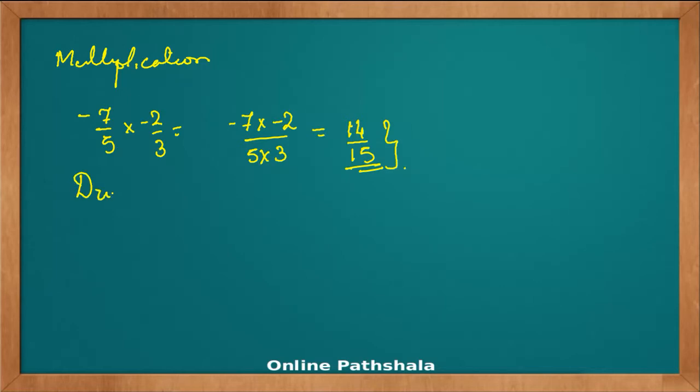For division, if we have an example like 7 by 5 divided by 4 by 9, we multiply it with the multiplicative inverse, that is the reciprocal. The reciprocal of 4 by 9 is 9 by 4. Because 4 by 9 into 9 by 4 will result in 1, giving us the multiplicative identity.